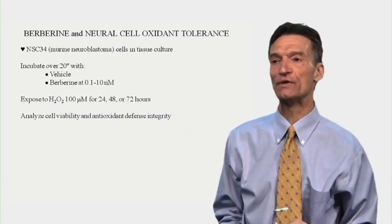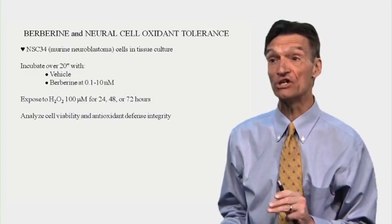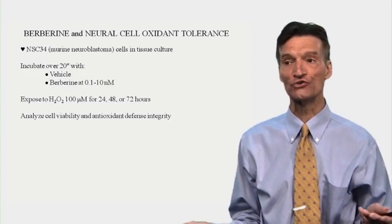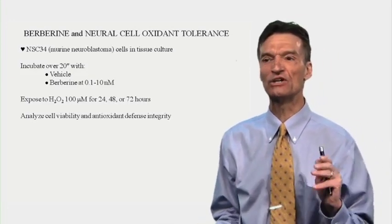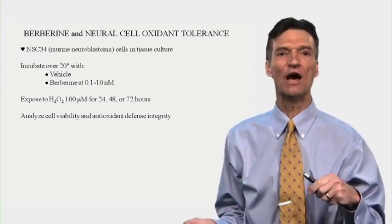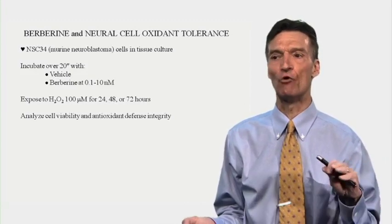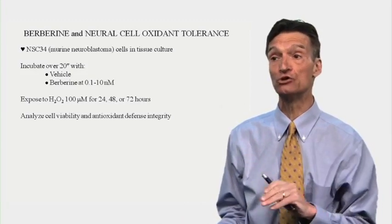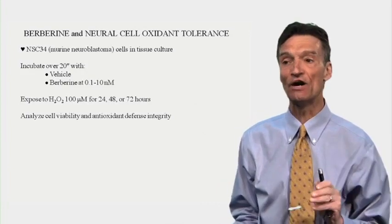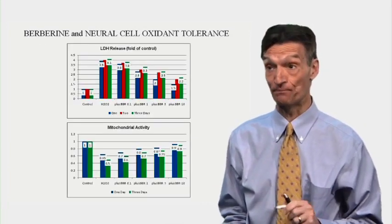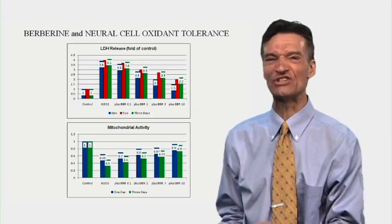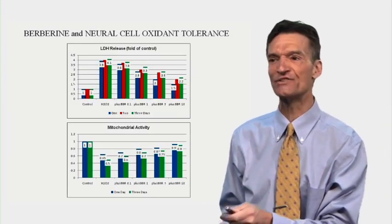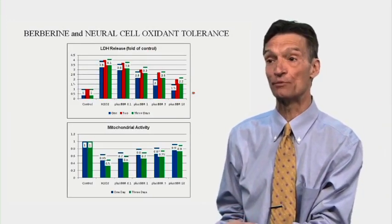Now we're going to take murine neural cells in tissue culture. We're going to incubate them over 20 minutes with vehicle (control cells) or berberine, then expose to hydrogen peroxide — a free radical — at a high level for one, two, or three days, and analyze cell viability and antioxidant defense integrity. LDH is released — the cells are dying from this powerful oxidative stress — but there's dose-related protection with berberine.